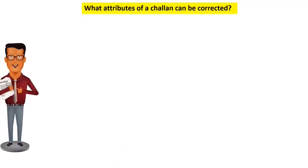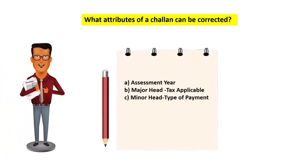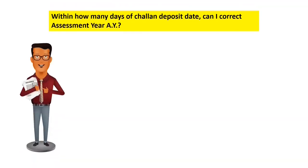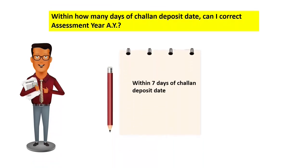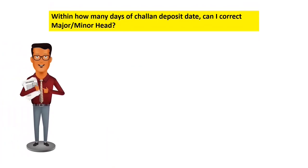There are three attributes of a Chalan that can be corrected on the e-filing portal: assessment year, major head (tax applicable), and minor head (type of payment). The assessment year can be corrected within seven days of the Chalan deposit date. For correcting the major head or minor head, you get 30 days post the Chalan deposit date.